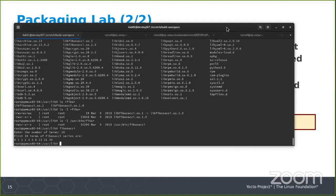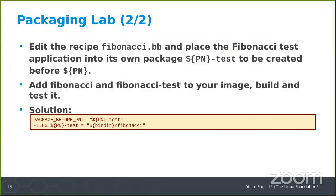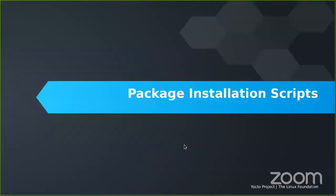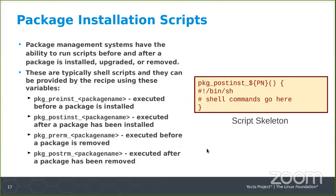We have about 18 minutes left. Let's talk about package installation scripts. If you want to carry out operations before a package is installed, after a package is installed, before a package is removed, or after a package is removed, you create script snippets and put them into your recipe. There is pkg_preinst_${PN} (and similarly pkg_postinst, pkg_prerm, pkg_postrm) — most commonly using ${PN}, but you can use other package names like ${PN}-test.